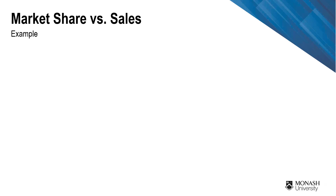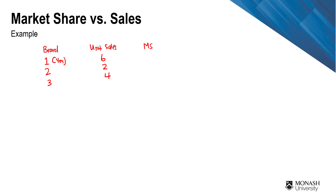Say that in the market you are competing in, you have three brands: brand one (that's you), brand two, and brand three. For simplicity, I'll use unit sales: brand one has six unit sales, brand two has two, and brand three has four. The total market is 6 + 2 + 4 = 12. So brand one's market share is six out of 12.